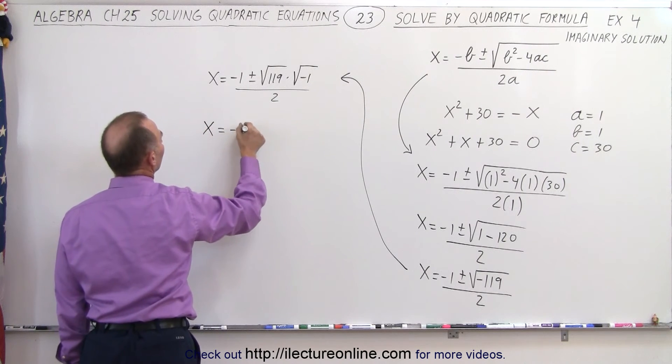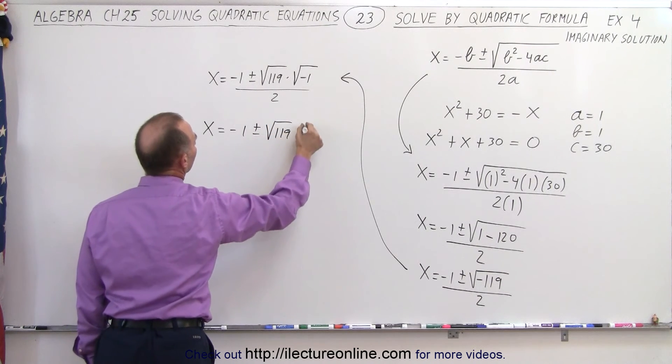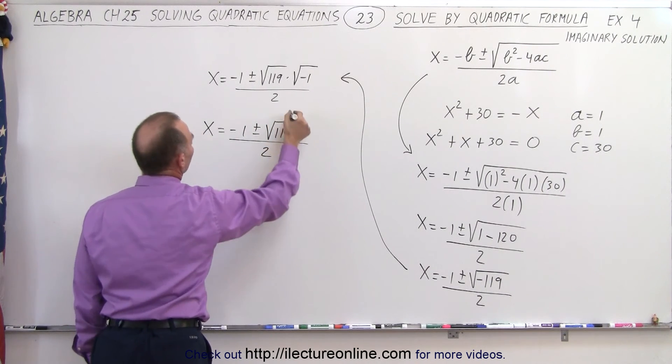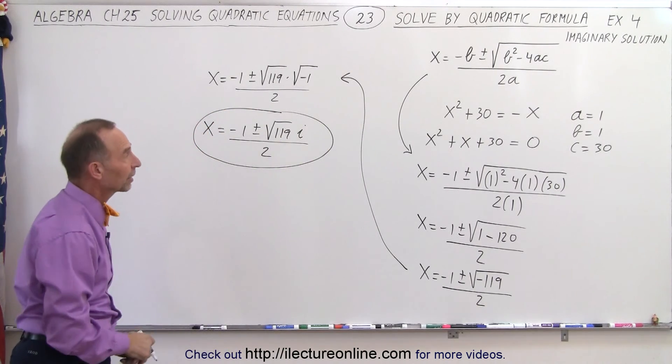So we have x is equal to minus 1 plus and minus the square root of 119i all divided by 2. Those give you the two imaginary solutions for that particular quadratic equation.